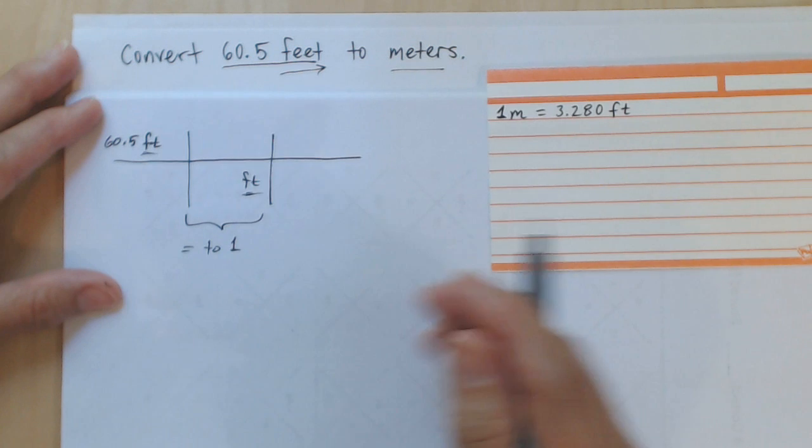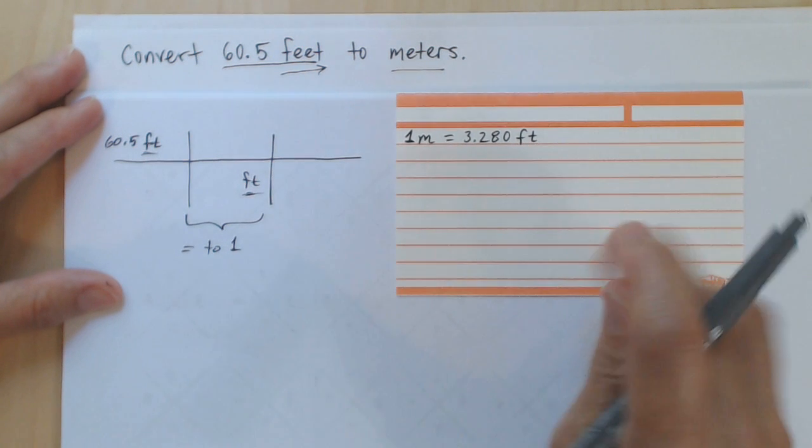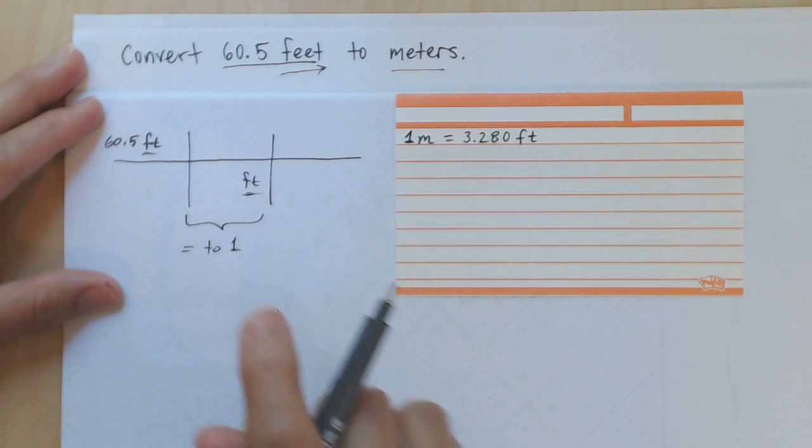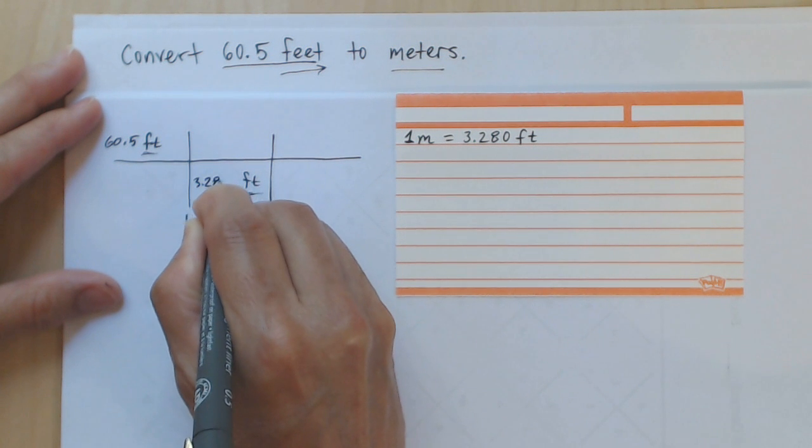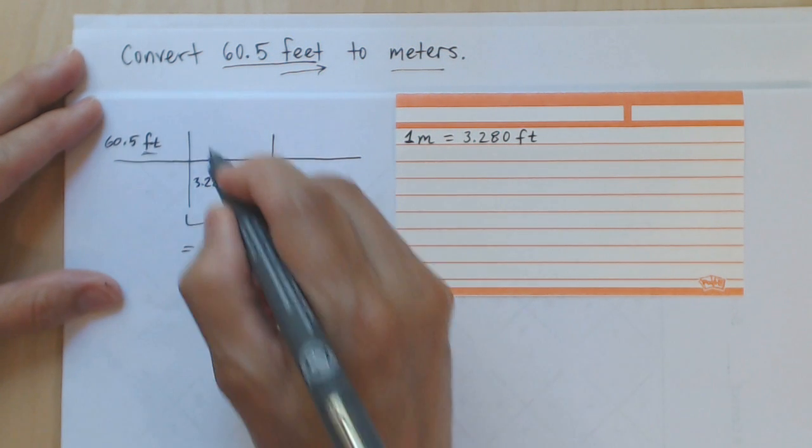The way to do that now is to use the conversion factor that I've either been given or looked up. I can write now 3.280 feet is equal to one meter.